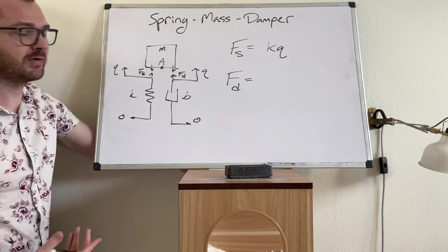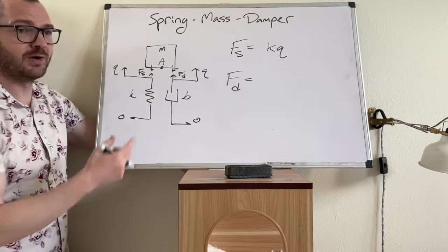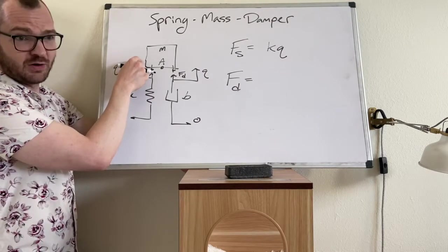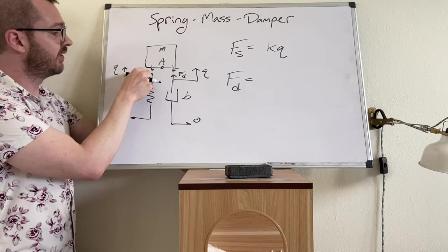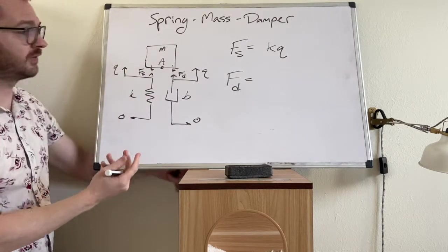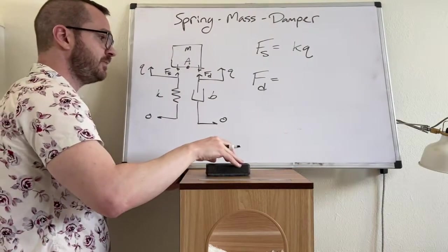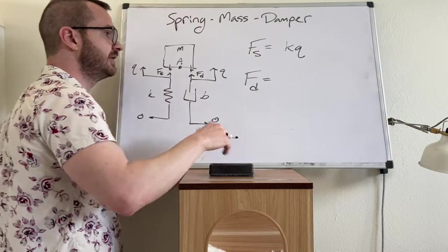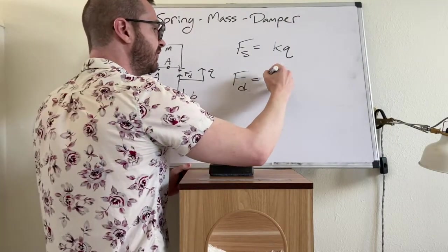Now, why do you get the same answer regardless? Because in a moment, we're going to do Newton's second law for the block and the arrows correspond to a sign because this is vector. Okay.